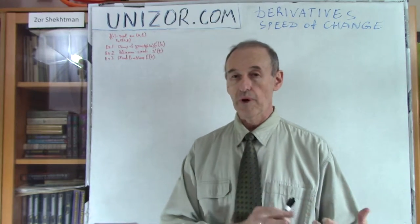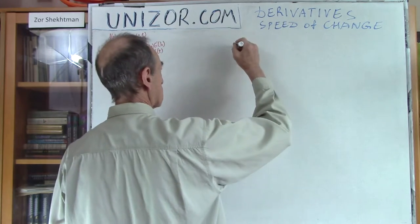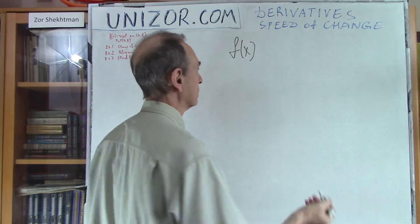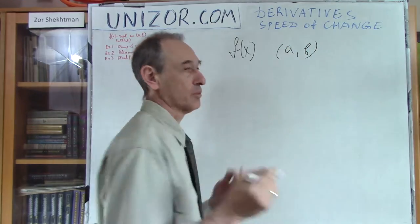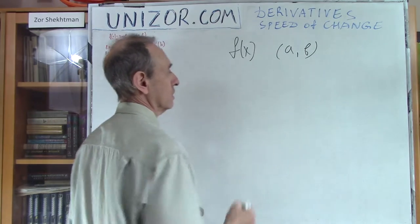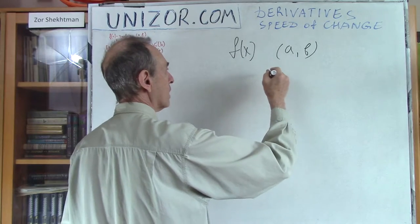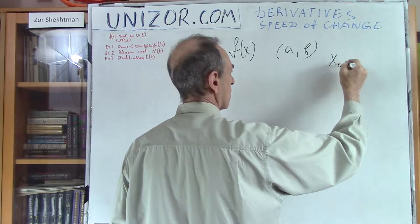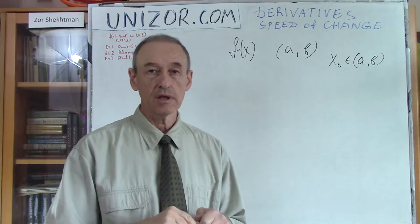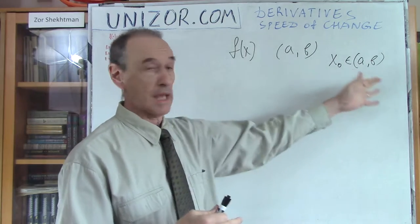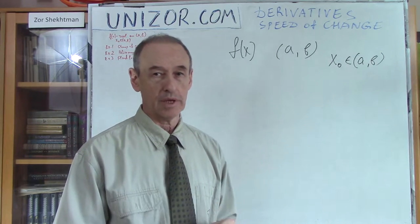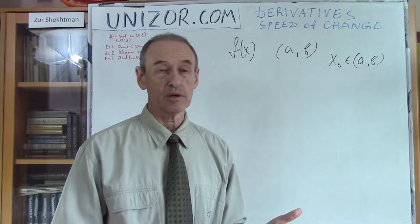Let me start from the more abstract things. Consider we have a certain function — a real function, which means real argument and real value. It's defined on a certain interval from A to B, where A or B can actually be infinite — minus infinity, plus infinity, or concrete from one value to another. We are interested in a certain point, let's call it x0, which belongs to this interval, and we would like to analyze the behavior of this function at this point. If we know how to analyze behavior at this particular point, we can analogously analyze the behavior at all other points.